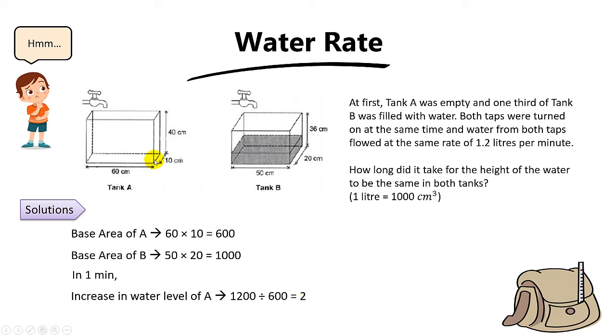While for tank B, where you take 1200 divided by 1000, you get 1.2 cm. Can you see that in one minute the water level here increases at a faster rate as compared to tank B?